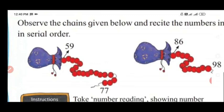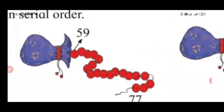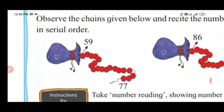Now we will look at the other number chains. First we will look at this number chain which has the first number 59 and the last number 77. We will recite the numbers after 59 till the number 77. Okay, let's start.